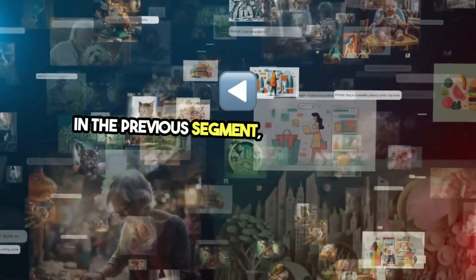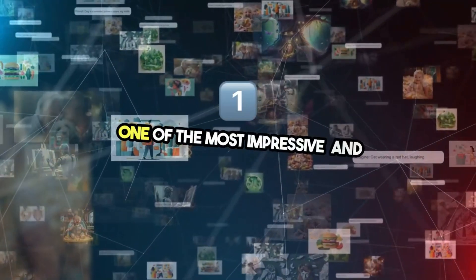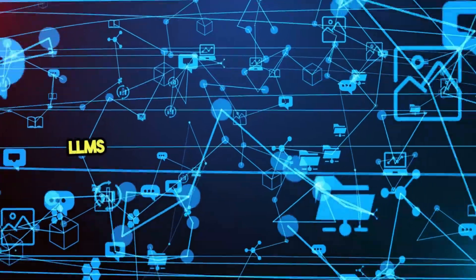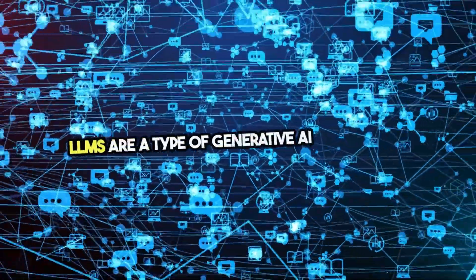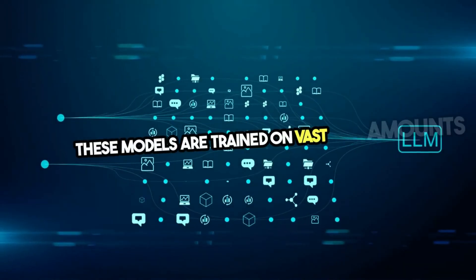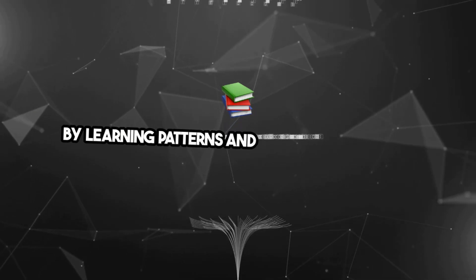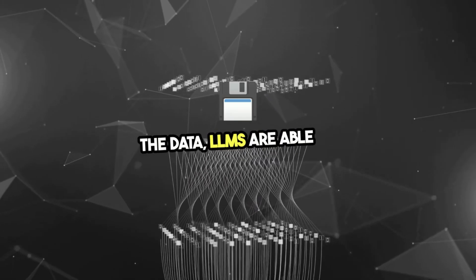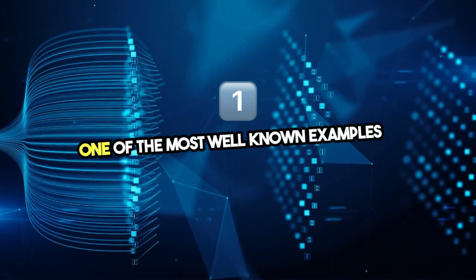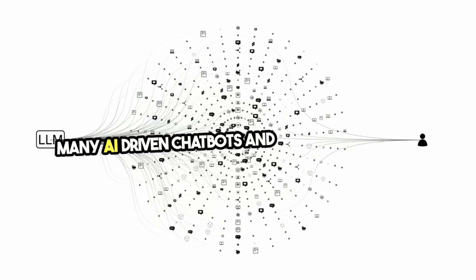In the previous segment, we discussed how generative models create new data that resembles the original. One of the most impressive and powerful applications of generative models today is the large language model, or LLM. LLMs are a type of generative AI specifically designed to understand and generate human-like text. These models are trained on vast amounts of text data, everything from books and websites to social media posts. By learning patterns and relationships within the data, LLMs are able to generate coherent and contextually appropriate text. One of the most well-known examples is GPT, or Generative Pre-Trained Transformer, which powers many AI-driven chatbots and virtual assistants.